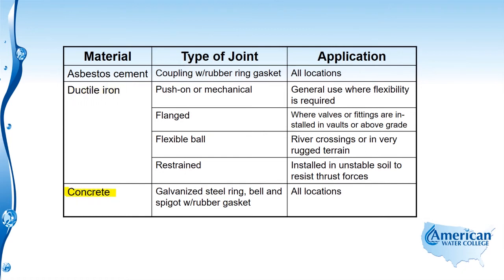Next is concrete pipe. The types of joints used for concrete pipe are a galvanized steel ring and a bell and spigot with rubber gaskets. These joints are used in all locations.